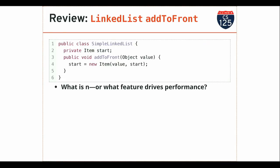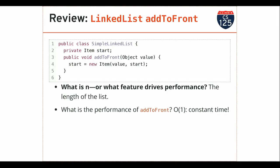Let's look at this from a performance perspective. This is a special case of add. Can anybody identify N — that's always our first step when doing big-O analysis. What's the feature that drives performance? There's no loop. So there is no N in this problem. N is going to be the length of the list for other operations, but for this particular operation, this is constant time. All I'm doing is creating a new item and modifying a reference. That's it.